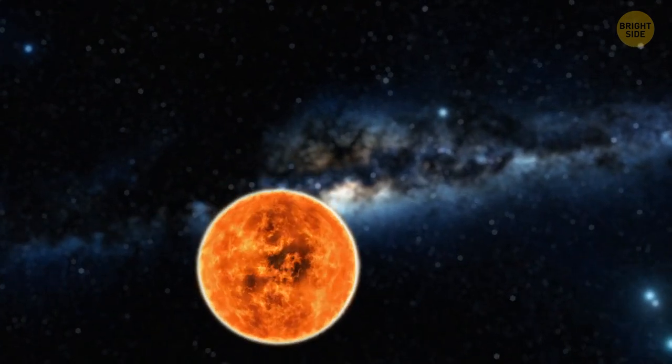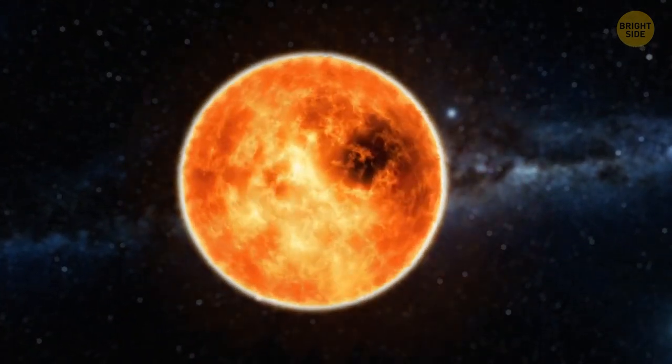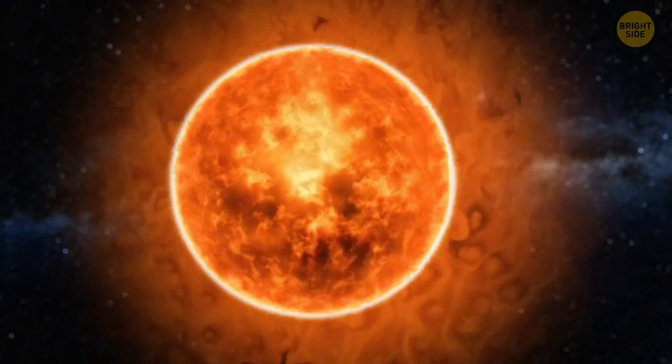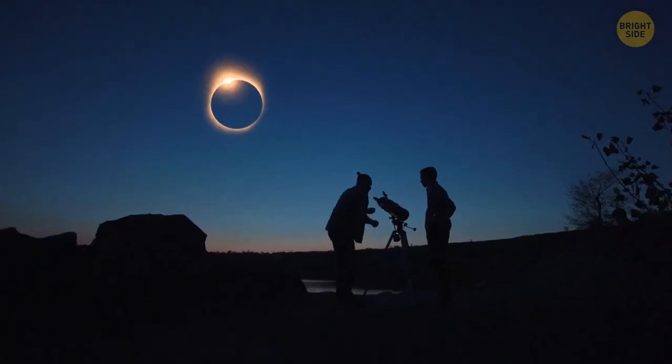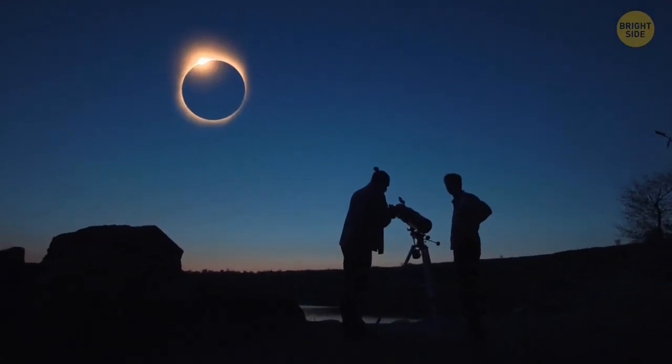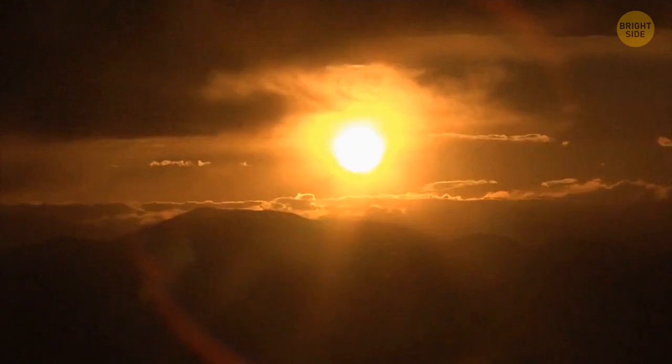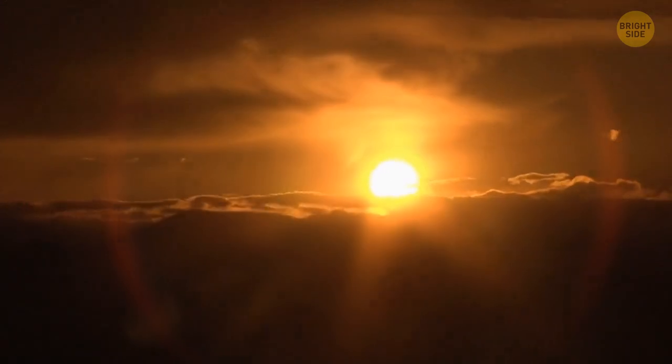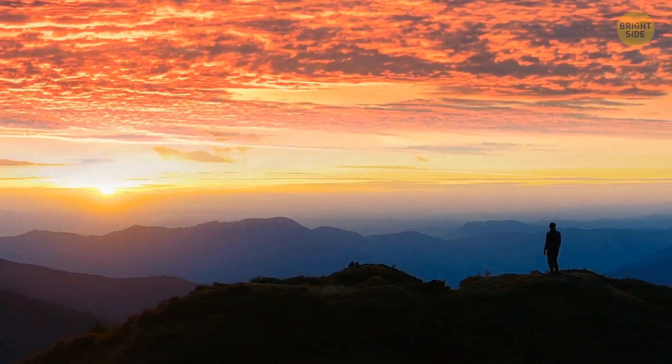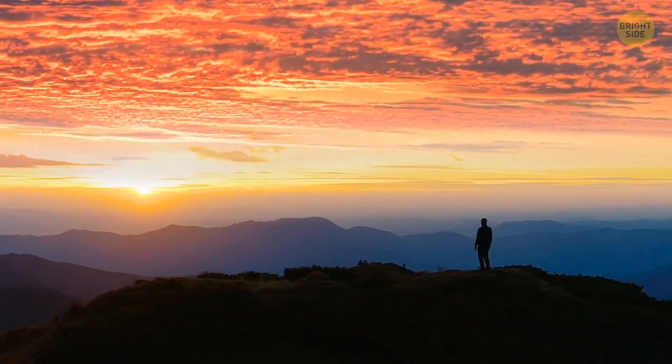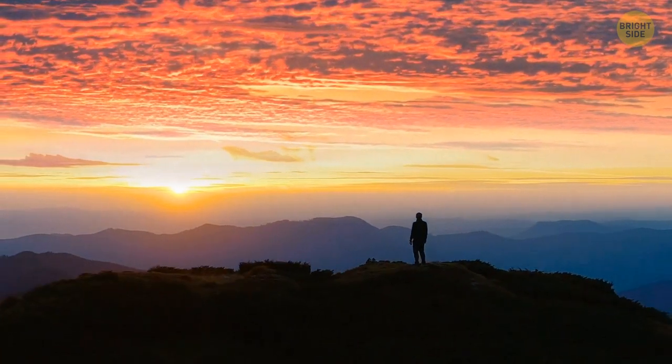And then, there's the corona, a gaseous envelope of the sun. The most powerful ejections take place there. You can see the corona during eclipses, when the moon covers the solar disk. Then, you can notice some kind of glow around the star. This is the corona. It extends for millions of miles around the sun. And the Parker Solar Probe touched precisely that area.